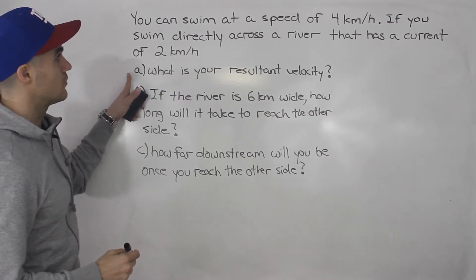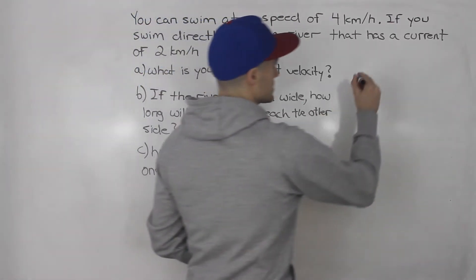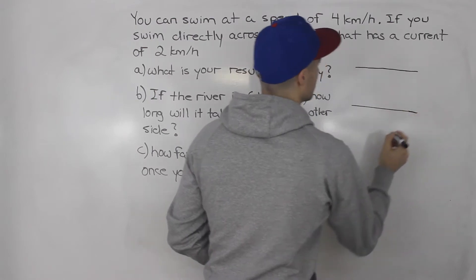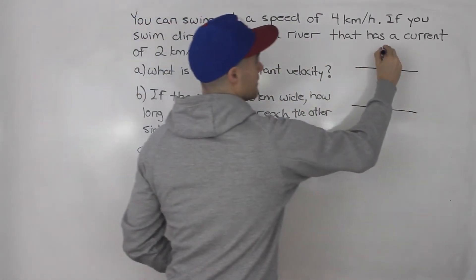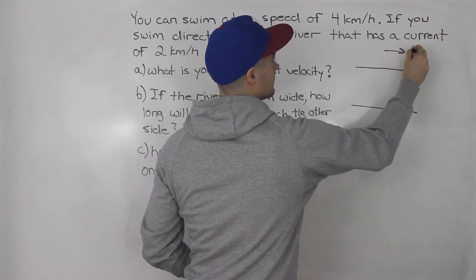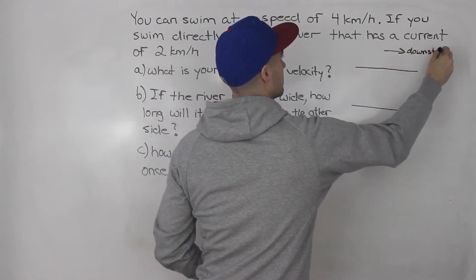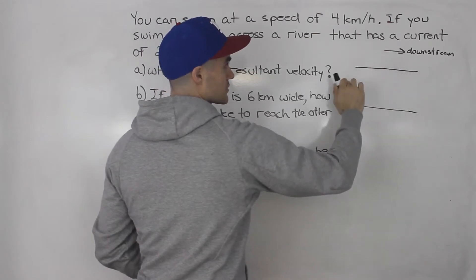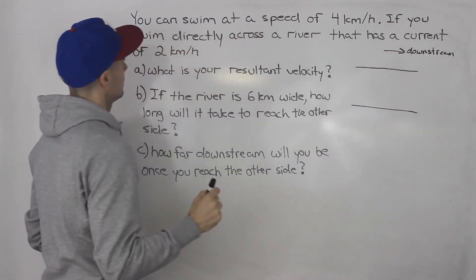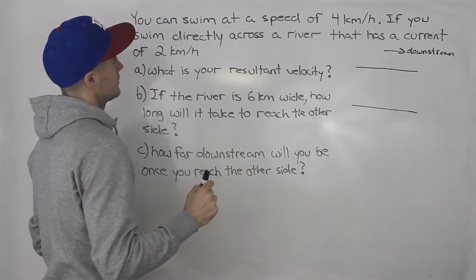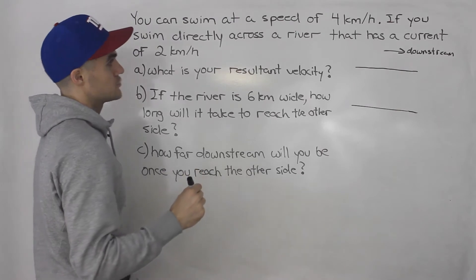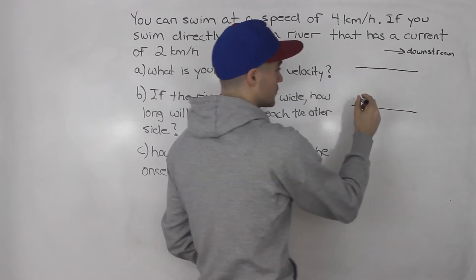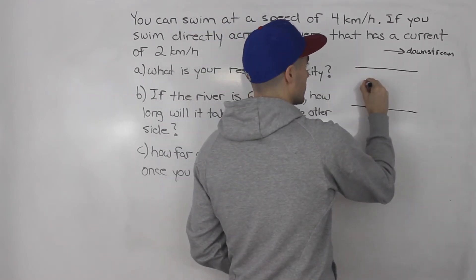Starting off with part A — what is your resultant velocity? We can draw a diagram for this. Let's say that these are the two shores of a river, and this way here is downstream, meaning that the current is going that way. We're told you can swim at a speed of four kilometers per hour and you're going to swim directly across the river, starting here — so we draw a vector going directly across.